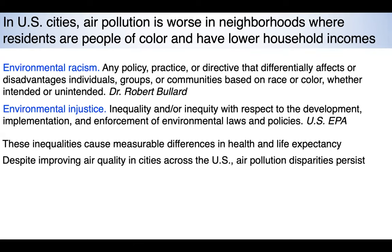I want to introduce two definitions. The first is environmental racism, defined by Dr. Robert Bullard as any policy, practice, or directive that differentially affects or disadvantages individuals, groups, or communities based on race or color, whether intended or unintended. The second, from the US EPA, is environmental injustice — inequality or inequity with respect to the development, implementation, and enforcement of environmental laws and policies. These inequalities cause measurable differences in health and life expectancy, particularly for African Americans, and air pollution disparities have persisted despite improving air quality across US cities.